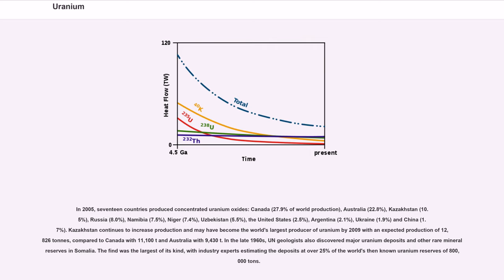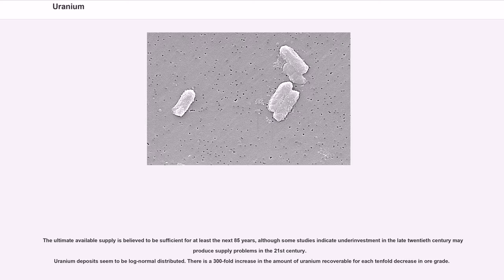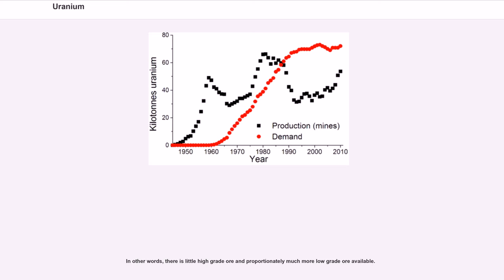Kazakhstan continues to increase production and may have become the world's largest producer of uranium by 2009 with an expected production of 12,826 tons, compared to Canada with 11,100 tons and Australia with 9,430 tons. In the late 1960s, UN geologists also discovered major uranium deposits and other rare mineral reserves in Somalia. The find was the largest of its kind, with industry experts estimating the deposits at over 25% of the world's then known uranium reserves of 800,000 tons. The ultimate available supply is believed to be sufficient for at least the next 85 years, although some studies indicate underinvestment in the late 20th century may produce supply problems in the 21st century. There is a 300-fold increase in the amount of uranium recoverable for each 10-fold decrease in ore grade. In other words, there is little high-grade ore and proportionately much more low-grade ore available.